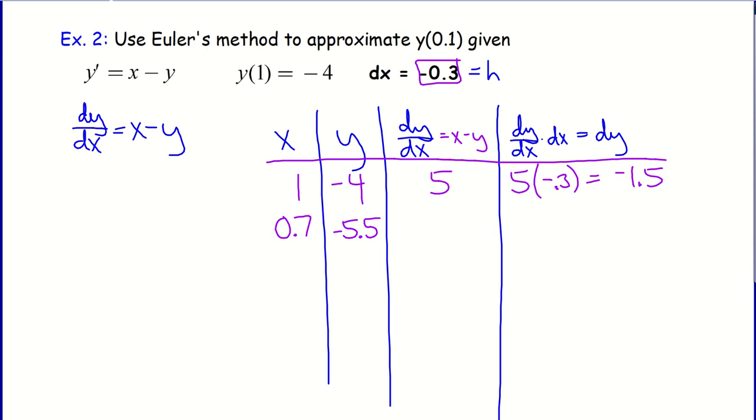Then I just repeat the process. So now here, the slope would be x minus y again. So that would be 0.7 minus negative 5.5, which would be 6.2. And so then if I take 6.2 and I multiply it by the change in x, which again is leftward 0.3 units, I get negative 1.86 for the change in y. And yes, you are welcome to use your calculator on these problems. Just make sure that you have work shown. So that means that at x equals 0.4, the y value, I was at negative 5.5, and I would want to subtract 1.86 from that to get the new y value of negative 7.36.